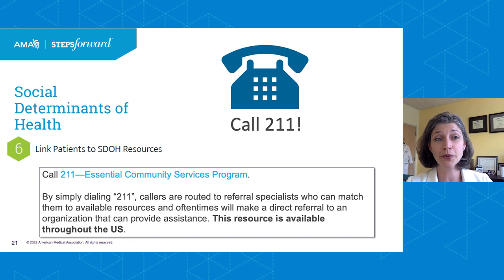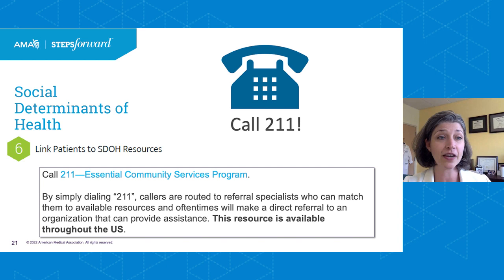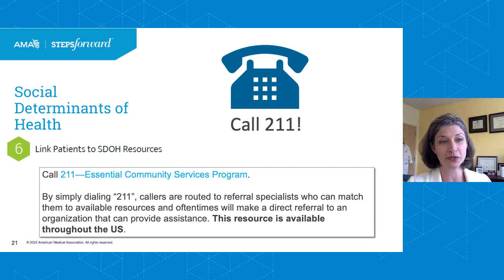Once you screen patients, it's incredibly important to link them to resources. The 2-1-1 service — the Federal Communications Commission nationwide service — means even one doctor or one clinic can make a big impact. By calling 2-1-1, people have access to essential community service programs covering food banks, shelters, job training, basic education, transportation, and childcare. If 2-1-1 doesn't work where you are, there is a call211.org website to get the local number, and you can also email them to link people to resources.